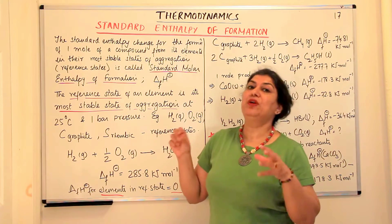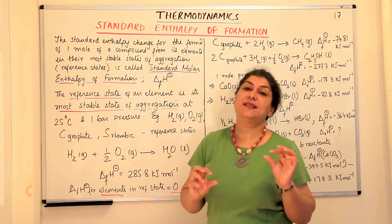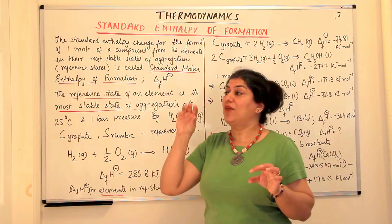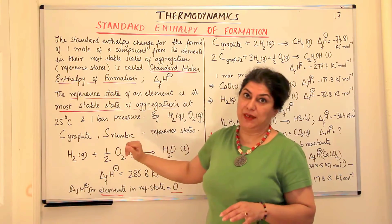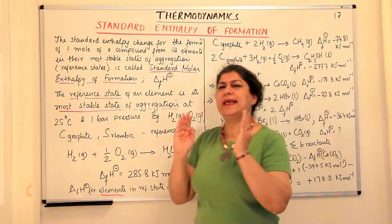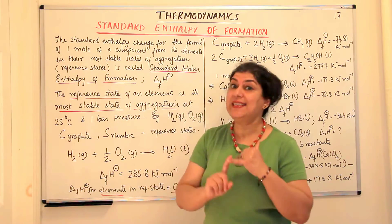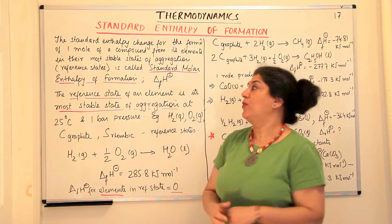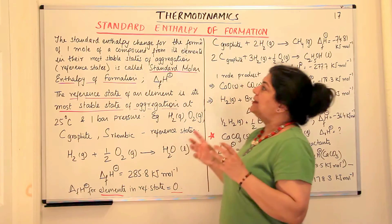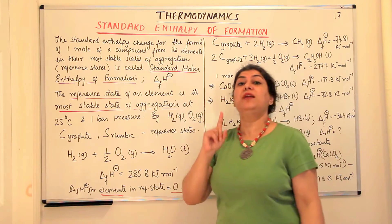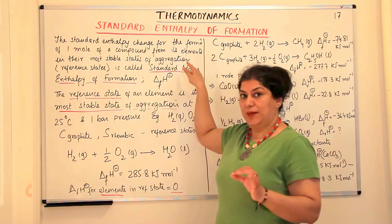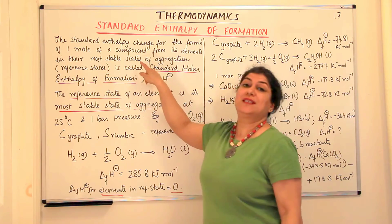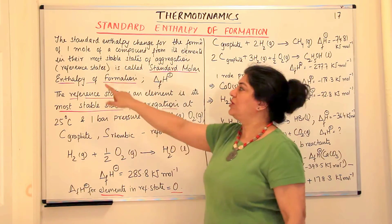When we are talking of the enthalpy of a reaction where a formation of a compound is taking place, we call it the enthalpy of formation. But there are certain things that are very specific when we talk of different enthalpies. So let us understand what exactly we mean when we say 'standard'. The word standard has its meaning — the conditions should be standard. The definition is that the standard enthalpy change is for the formation of one mole of a compound from its elements, whatever the constituent elements are, in their most stable states of aggregation, which are also called the reference states.